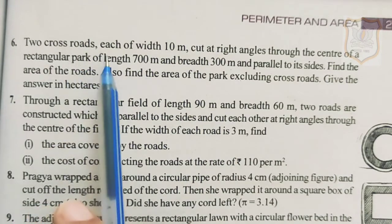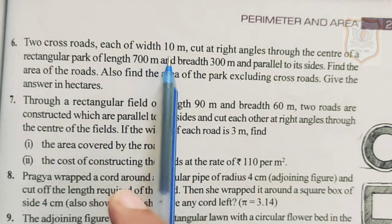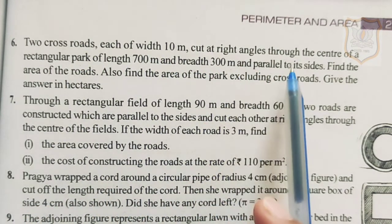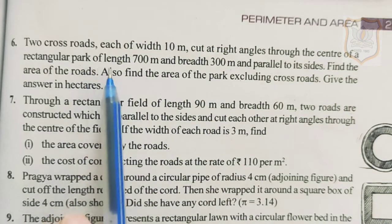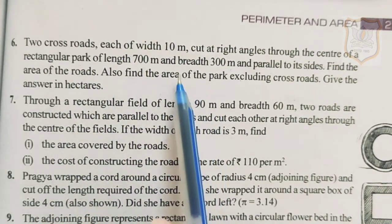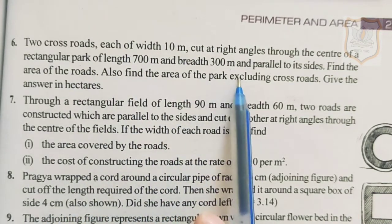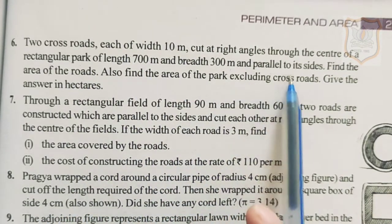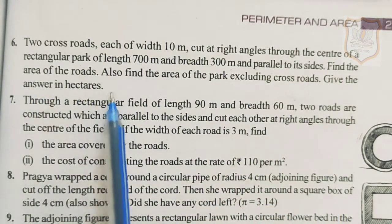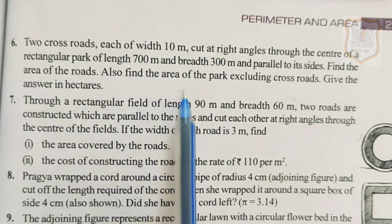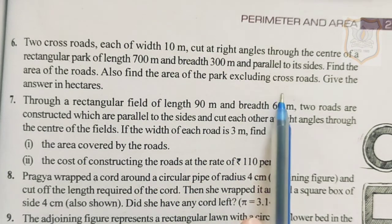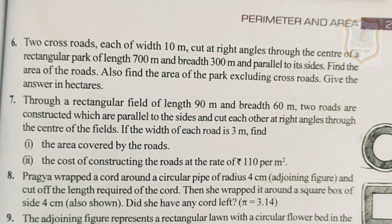Two crossroads each of width 10 meter cut at right angles through the center of a rectangular park of length 700 meter and breadth 300 meter, and parallel to its sides. Find the area of the roads, also find the area of the park excluding crossroads. Give the answer in hectares.